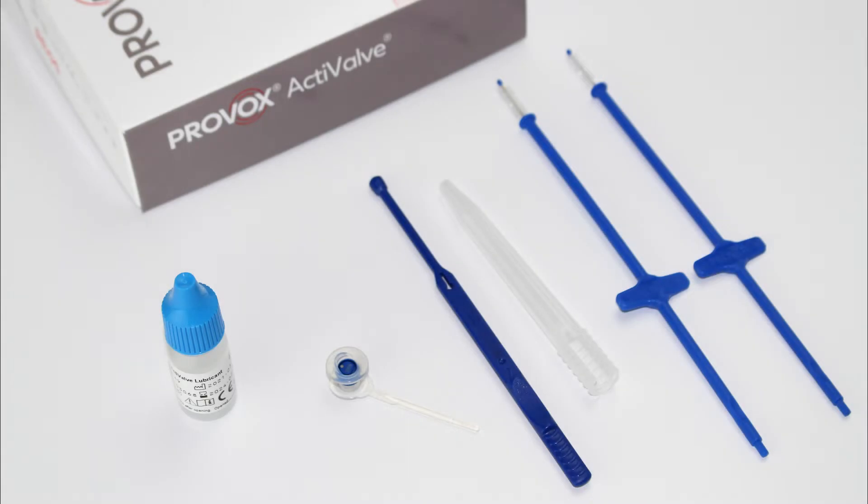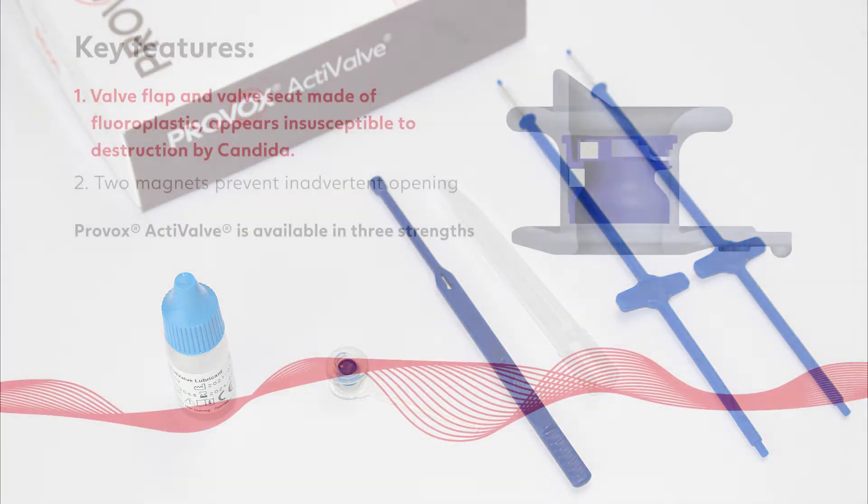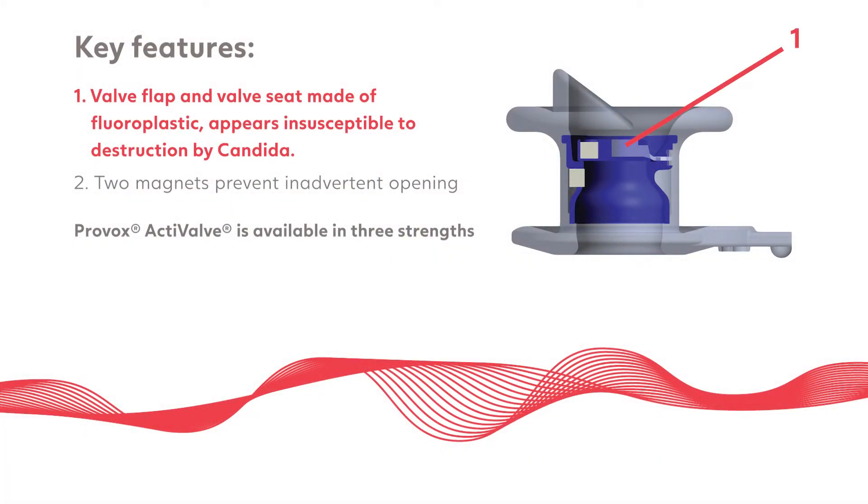Provox Active Valve is primarily designed for laryngectomy patients who experience early leakage through the voice prosthesis. The blue fluoroplastic material of the valve flap and valve seat help prevent the accumulation and infiltration of biofilm, which can disrupt the function of the valve and cause early leakage.